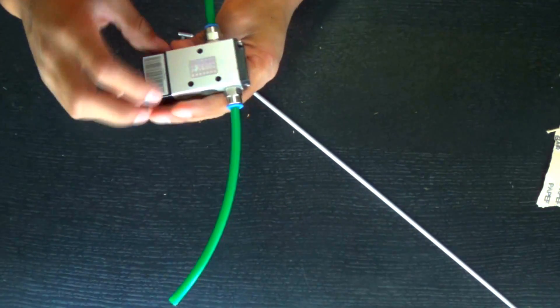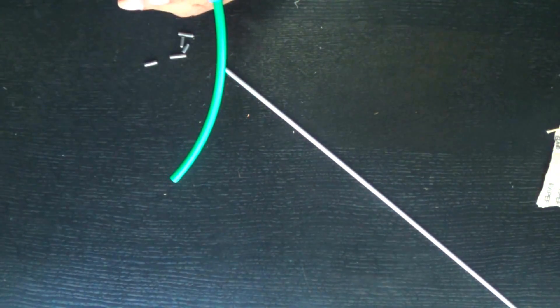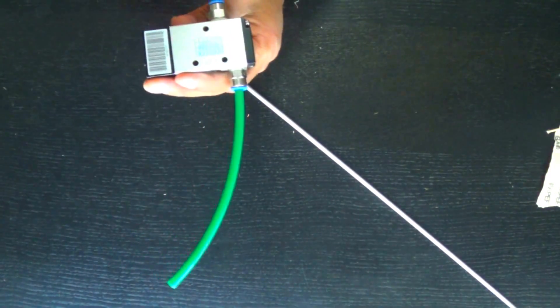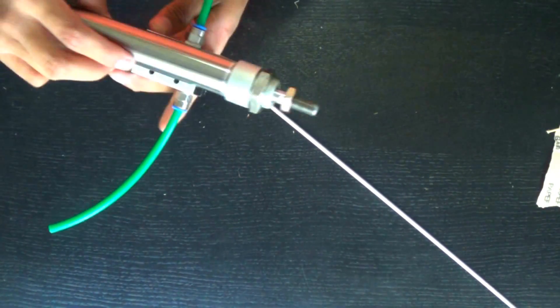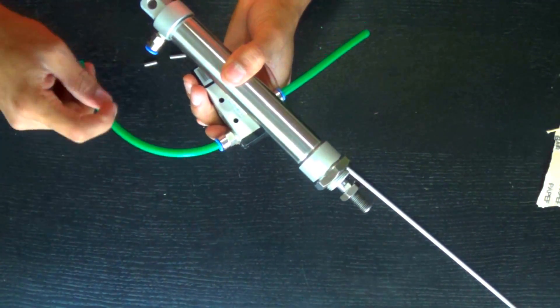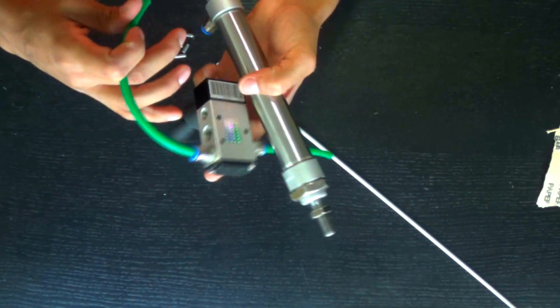Now the valve here, basically what it's going to do is in one position it's going to stop the flow of air. And then when I flip the position of the valve, it's going to let the air flow out into the barrel.